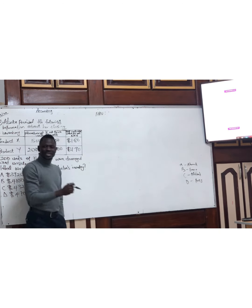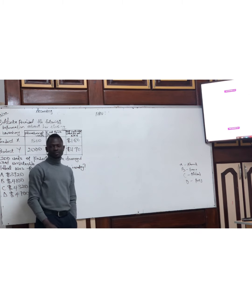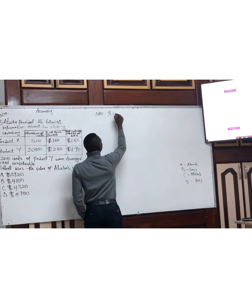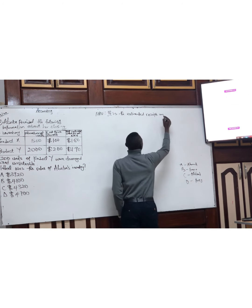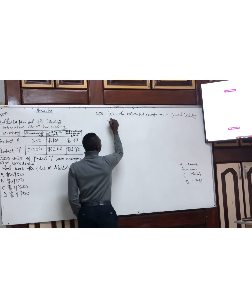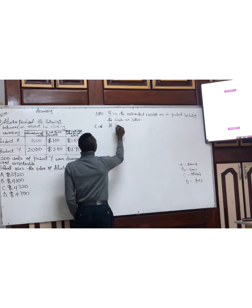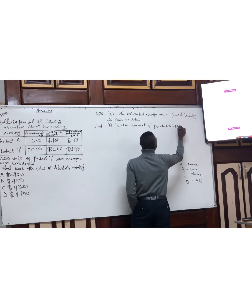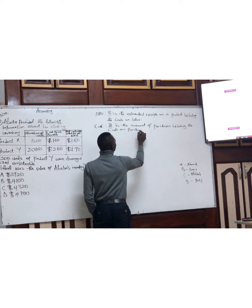Therefore, NLV is the amount you are going to sell the product — the estimated amount you are going to sell the product — including the cost on those sales. So to write it formally: NLV is the estimated receipts on a product including the cost on sales. The cost itself is the amount of purchases including the costs on purchases. For example, carriage inward.